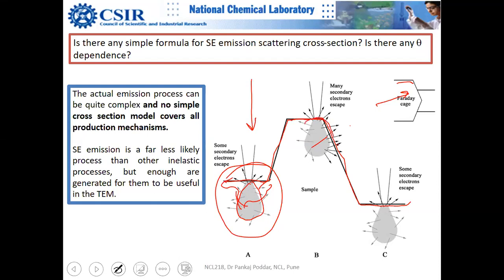The area facing the detector will be much brighter — it is like having a sun here lighting it up — while the area behind the hill will be darker.